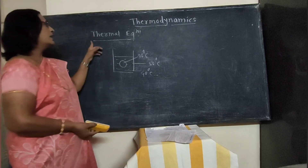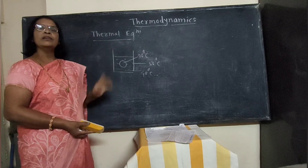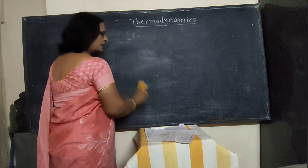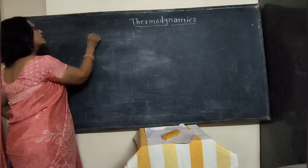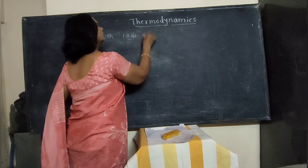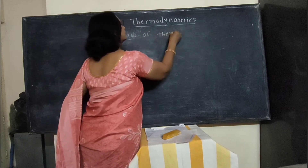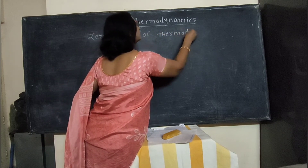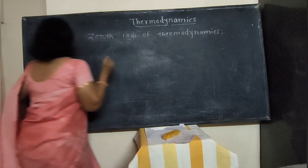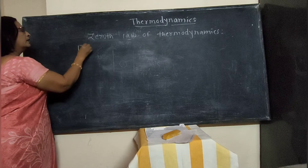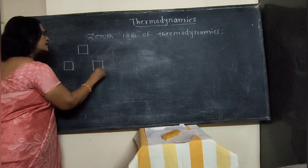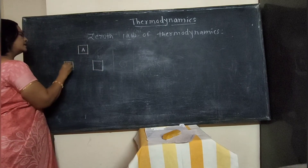By using the concept of thermal equilibrium, we have to study the zeroth law of thermodynamics. Now consider the figure. In this figure, three systems are there: system A, system B, and system C.